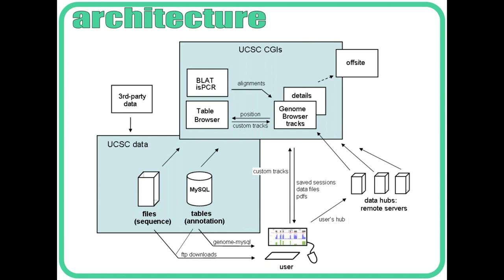The architecture of the browser can be summarised as follows: the blue regions are things that UCSC maintains, while outside the blue areas are things that come from us or are off-site. Typically the data come in from outside — even things we compute heavily on, such as our comparative genomics data, rely on data that came from somebody else's sequencing in the first place. We don't do any sequencing or genome assemblies here.